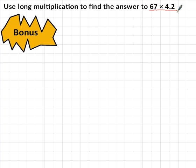Okay, well the first thing to say is that there's very little difference when you're multiplying decimals using long multiplication. We always begin with an estimate. 67 is roughly equal to 70, and 4.2 is roughly equal to 4. 70 times 4 equals 280.